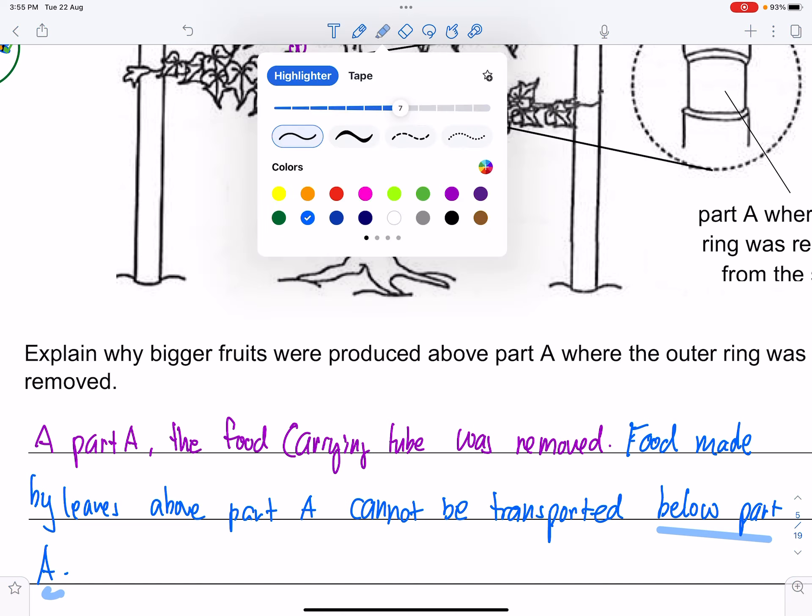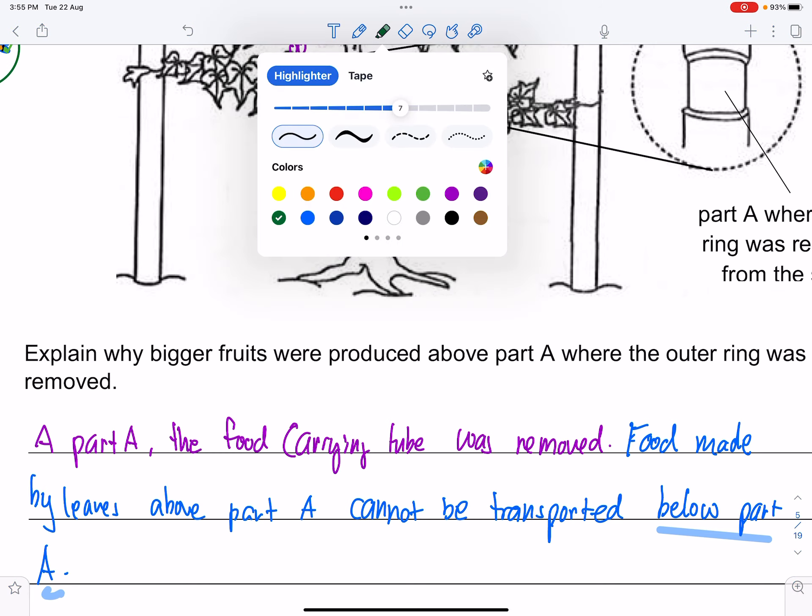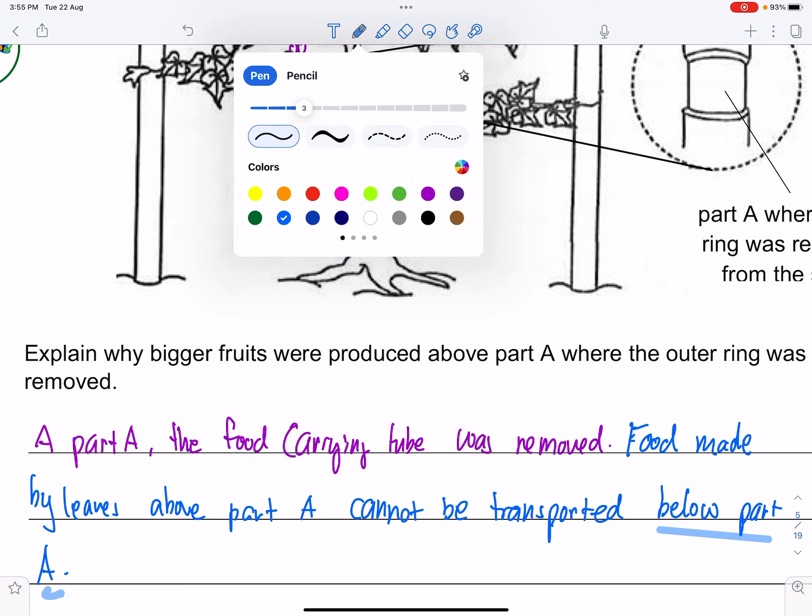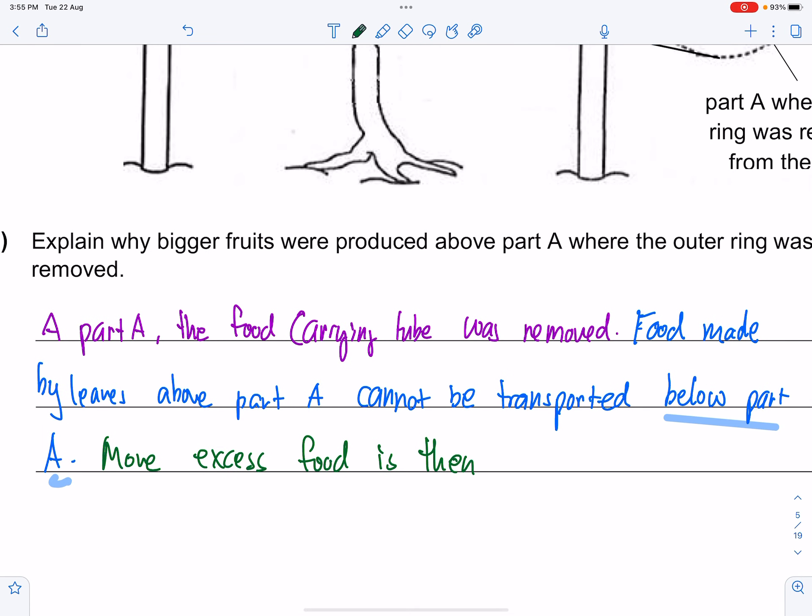And then after that, because it can no longer be transported below part A, more excess food, the food is then transported to the fruits, making it bigger.